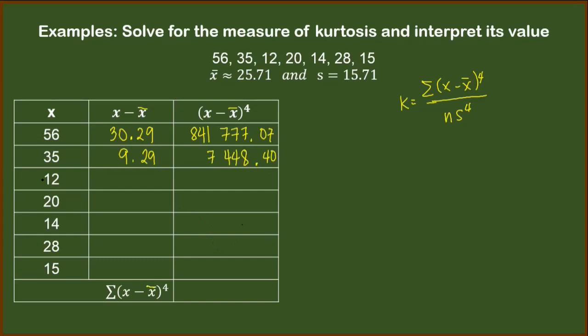Next, we have 12 minus 25.71. That is negative 13.71. Raising this to the 4th power, we have 35,330.50.